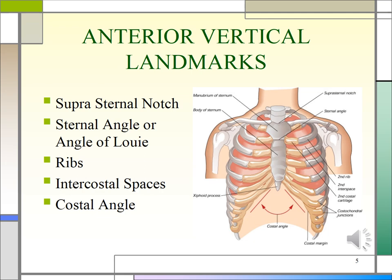When looking at anterior vertical landmarks, we have the suprasternal notch, the sternal angle — also called the angle of Louis or the manubrial angle — the ribs, the intercostal spaces, and the costal angle. Each intercostal space is numbered by the rib above it. Count down the ribs in the middle of the hemithorax because costal cartilages are too close together to count near the sternum. You can palpate easily down to the 10th rib.